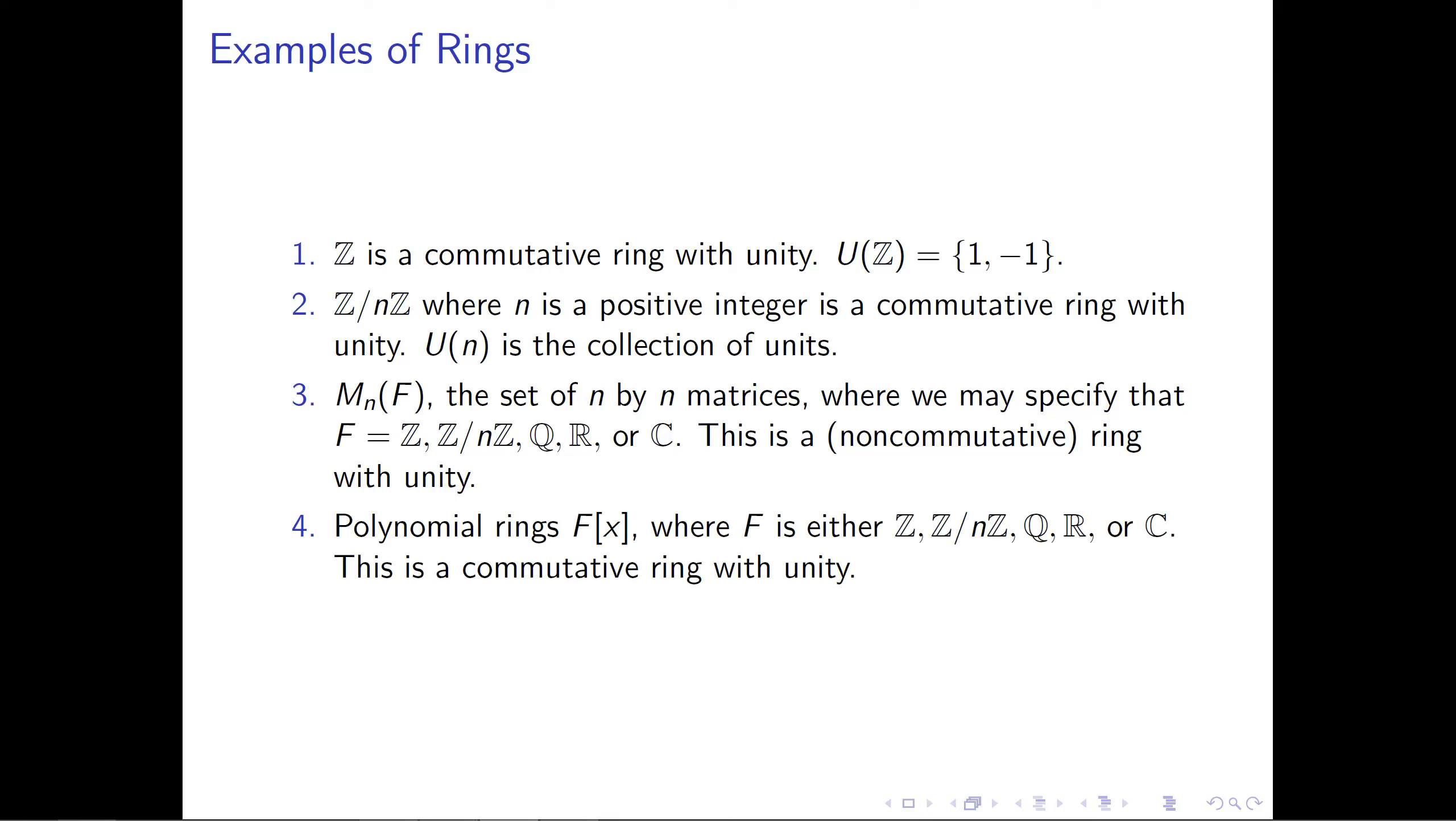And the next example is still going to be a commutative ring with unity. This is going to be polynomial, what we call polynomial rings. This is F[x]. Again, we're going to specify that our set F is either the integers, the integers mod n, rational numbers, real numbers, or complex numbers. Those are typically the choices we'll make for the set F. Still a commutative ring with unity, as I said, but just a slightly different example, slightly less familiar example than the integers or the integers mod n.